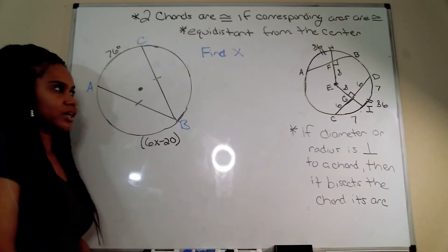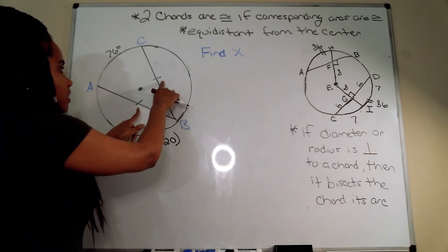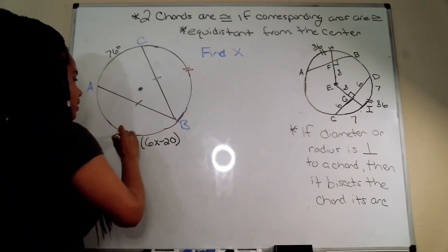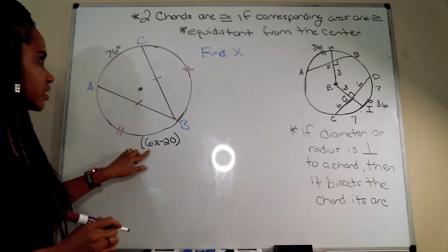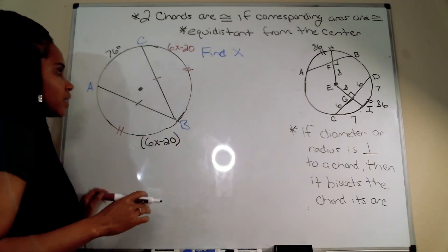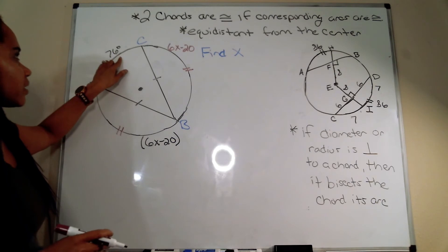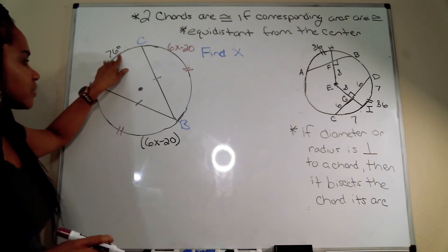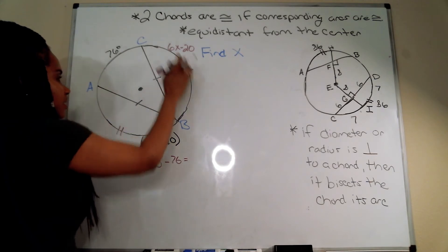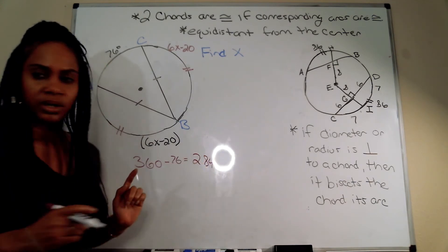In the next problem we want to find x. We have congruent chords, so their corresponding arcs are also congruent. If one arc is 6x minus 20, the other arc is also 6x minus 20. To find x, I can use the total degrees in a circle. With one arc given as 76 degrees, I subtract: 360 minus 76 equals 284 degrees for the combined remaining arcs.